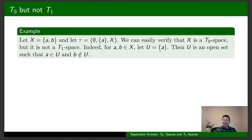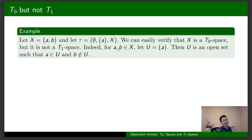Let U be this single-point set. We see that U is open because U belongs to tau, and a belongs to U, and b doesn't belong to U. By definition, X is a T0 space. How come it's not a T1 space? Because there is no open set containing b that doesn't contain a — the only open set containing b is X itself. There are only three open sets in this topological space, and the only open set containing b is X, which obviously contains a.